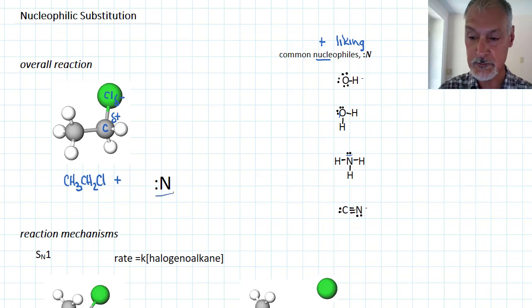So here I'm going to use this symbol for my nucleophile, reacting with my halogenoalkane, and I would then end up with CH3-CH2 with my nucleophile now attached, and the chlorine has now been released. So this is a general or an overall pattern to the reaction.